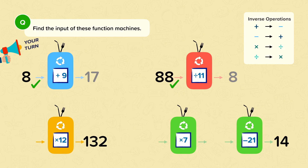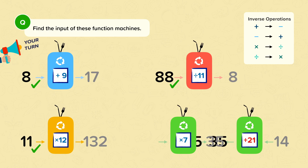Question 3: 132 goes in backwards and we need to do the inverse of multiplying by 12, which is dividing by 12. 132 divided by 12 is 11. And for our final one, 14 goes in backwards and the inverse of taking away 21 is adding 21. 14 add 21 is 35. 35 again goes backwards through the multiply by 7 function machine. The inverse of multiplying by 7 is dividing by 7. 35 divided by 7 is 5.